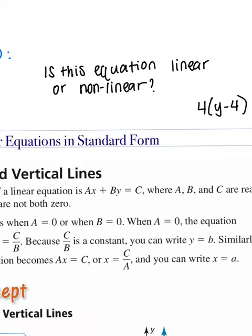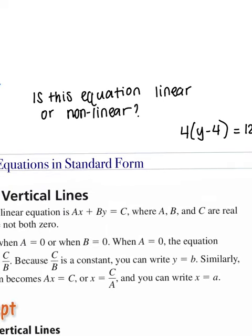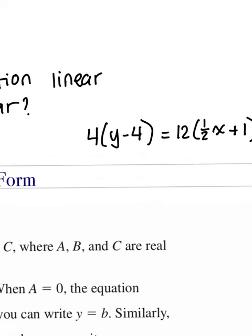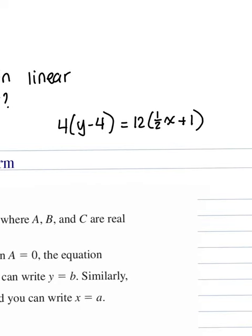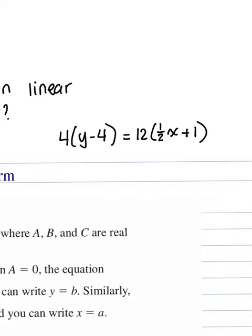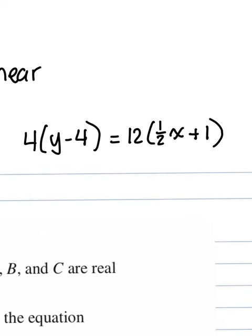If it can be written in y equals mx plus b form, then we know it is a linear function. So if it's a linear function, then we can distribute the 4 and the 12 and we'll be able to write it in y equals mx plus b form.